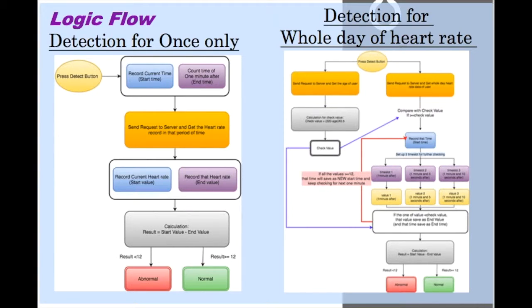Then the request of the whole day's heart rate is sent to the server. All the heart rate data will be compared with the check value. If the heart rate value is greater than or equal to the check value, it will set up three time slots for further checking, to make sure the end time of exercise is closer to one minute. Both three time slots will have their specific heart rate value. When one of the heart rate values is greater than or equal to the check value, that time slot will be set as end time and that value will be set as end value.